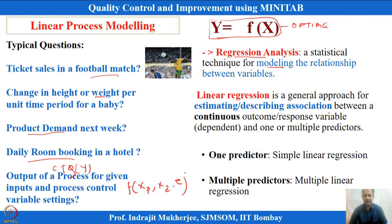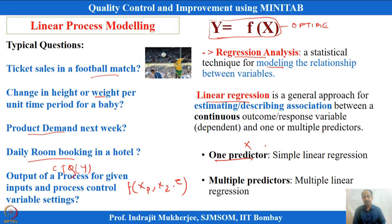We want to optimize the total process using optimization techniques to reach the optimal scenario — what should the X conditions be to optimize Y. The simplest technique we will learn is linear regression: one predictor X and one predicted Y, known as simple linear regression. For multiple X variables, it becomes multiple regression.